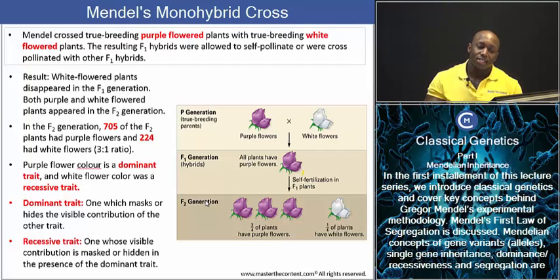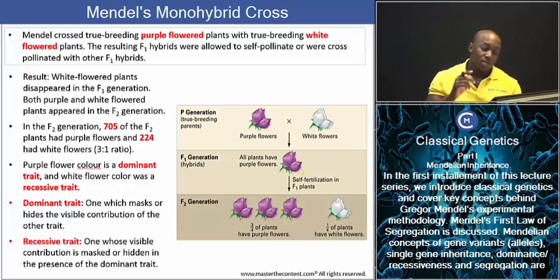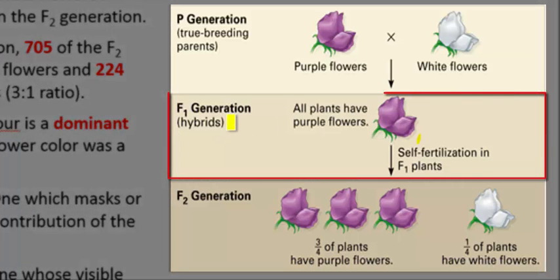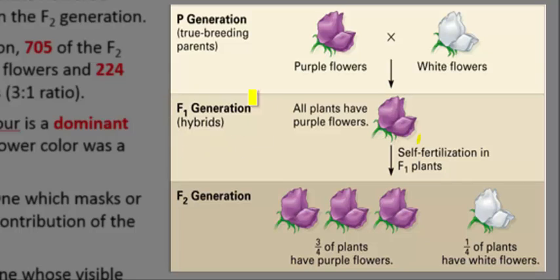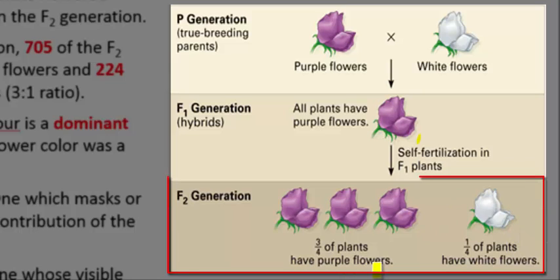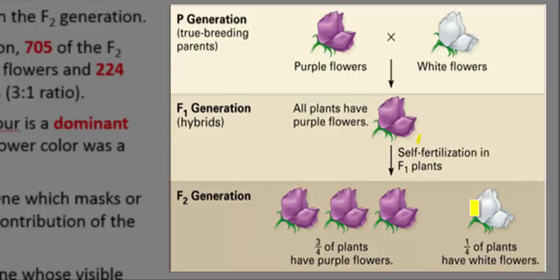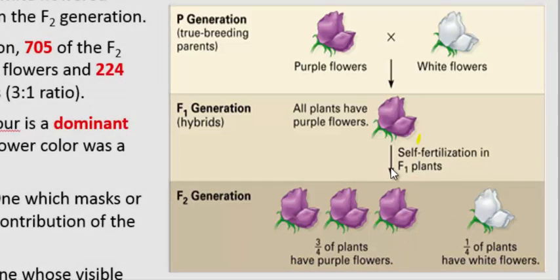What Mendel actually saw when he did his experiments was quite the opposite. All the flowers in the first filial generation — the F1 generation produced by crossing the parents — were all purple. The white color character had completely disappeared in the F1 generation. Now after he crossed the F1 hybrids, the white colored flowers reappeared — they magically reappeared in the second filial generation, the F2 generation. So what happened to the white color in the first filial generation, and why did it reappear randomly in the second filial generation?